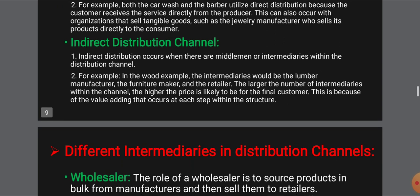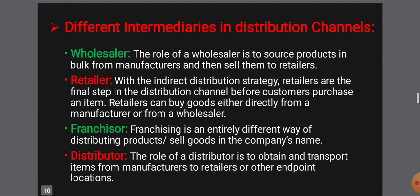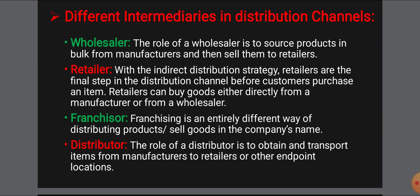In the distribution channels, there are four main intermediaries: wholesalers, retailers, franchisors, and distributors. These four intermediaries are involved in the indirect distribution channel. We will now look at the meaning and role of each one.